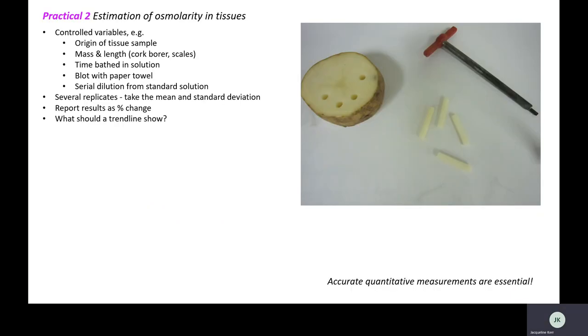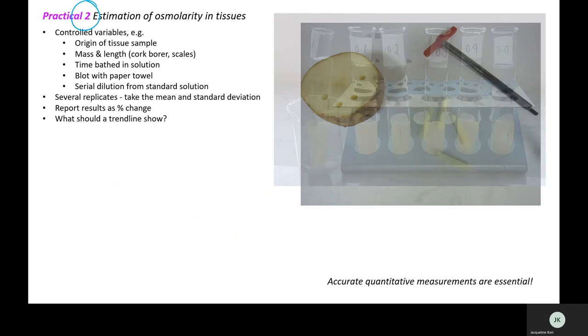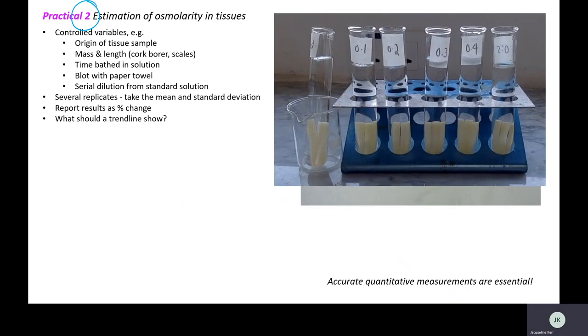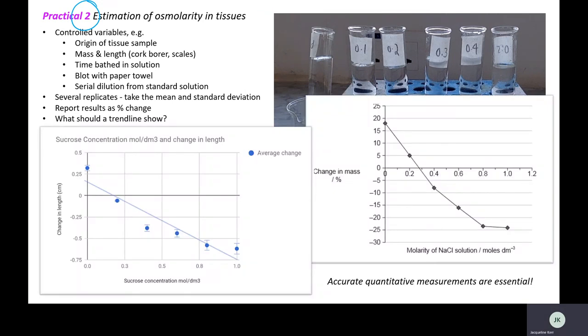We see practical two, one of those techniques you can be assessed on. We stamped out bits of potato with a cork borer, left them in some different solutions, perhaps overnight or for a couple of hours, and then recorded either the percentage change in mass or change in length. Important things to note: you have to keep control of where the tissue is coming from, make sure they're all the same length and width with a cork borer, get mass on the scales, leave them for the same length of time. At this stage in the course, you know a lot about controlled variables.